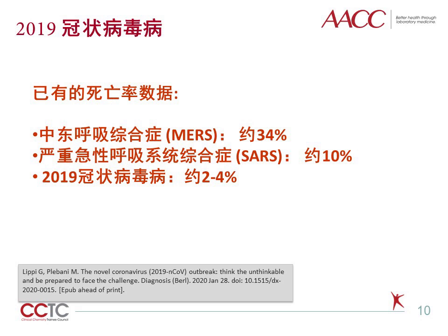世界卫生组织最近的数据表明，虽然平均来说每个2019冠状病毒感染者能传染的人数比SARS和MERS要多，但2019冠状病毒病的致病率要低一点。从已有的死亡率数据来看，最高的是MERS，大概34%；SARS居中，大概10%；2019冠状病毒病最低，大概2%到4%。（WHO data shows COVID-19 is more transmissible than SARS and MERS but has a lower fatality rate. Mortality rates are approximately 34% for MERS, 10% for SARS, and 2–4% for COVID-19.）